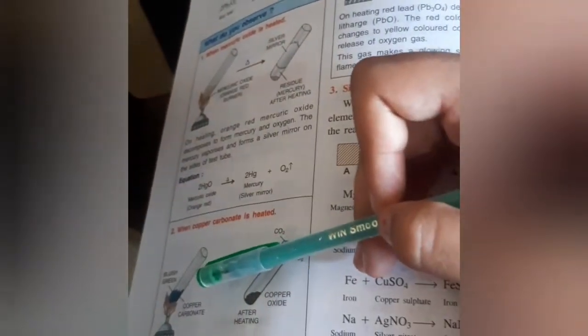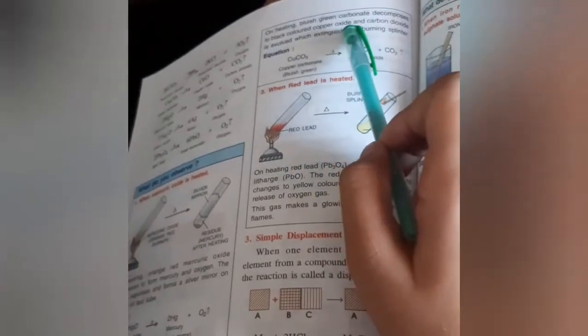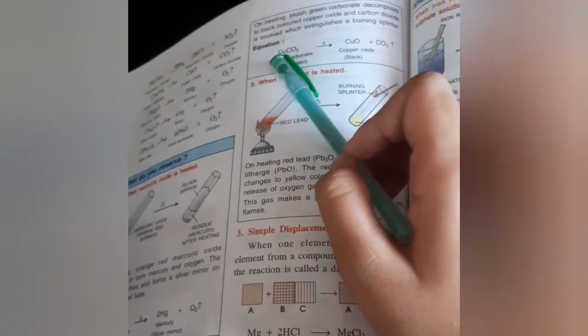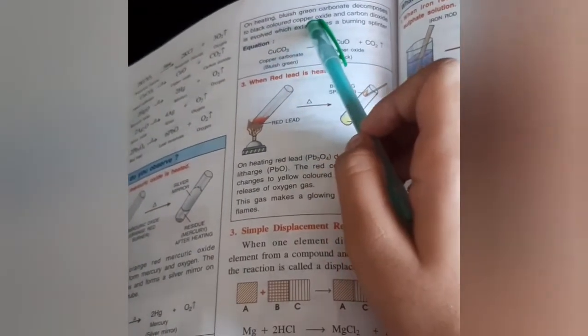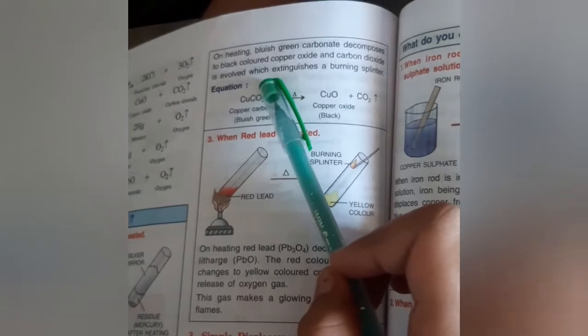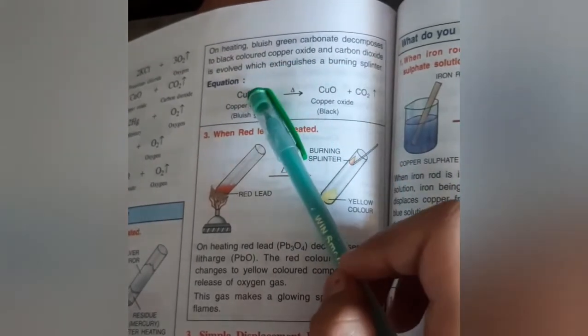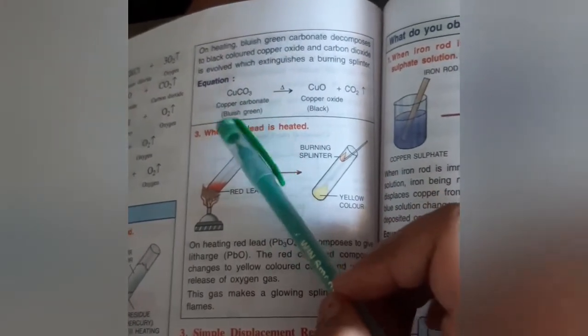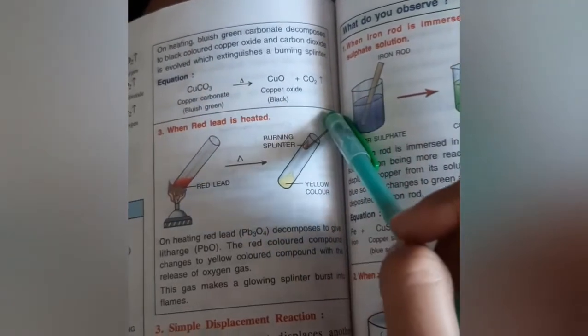This bluish green carbonate decomposes to black colored copper oxide and CO2 is released, which extinguishes a burning splinter. The equation is copper carbonate is converted into copper oxide plus carbon dioxide.